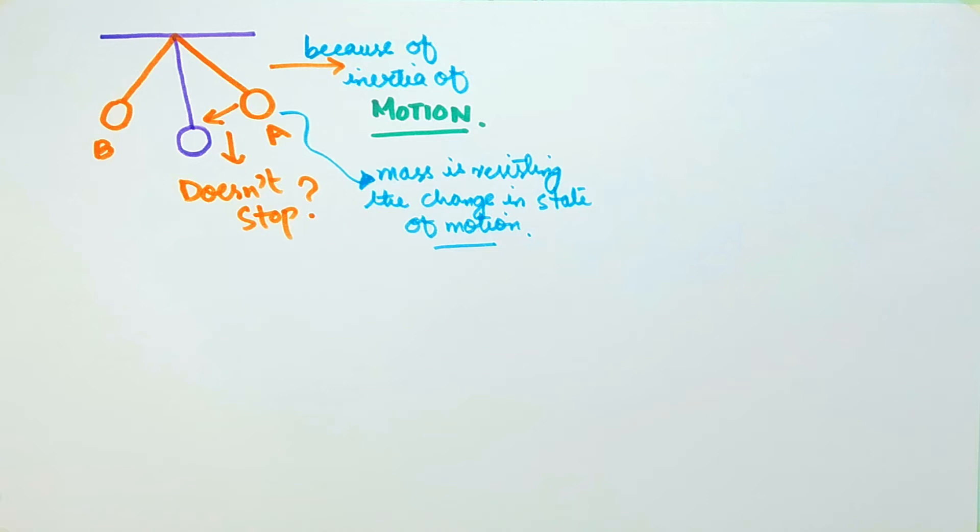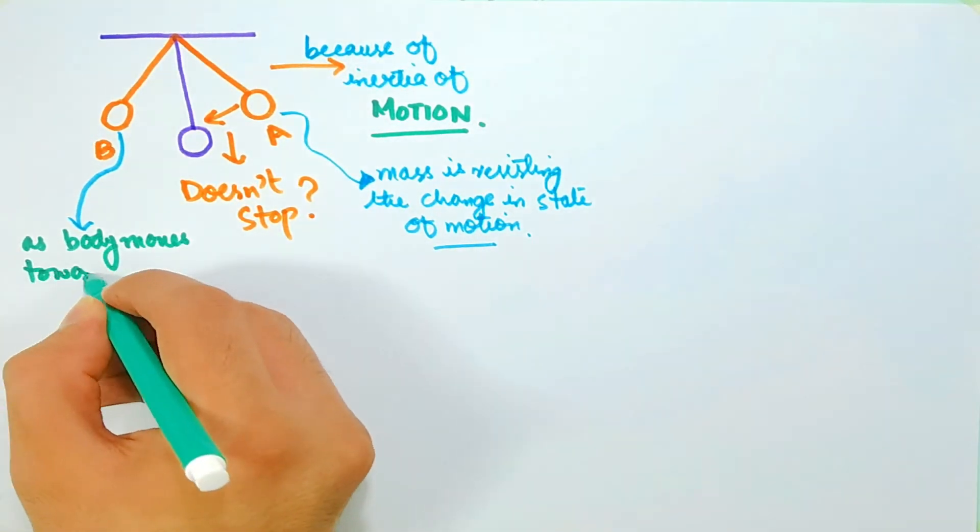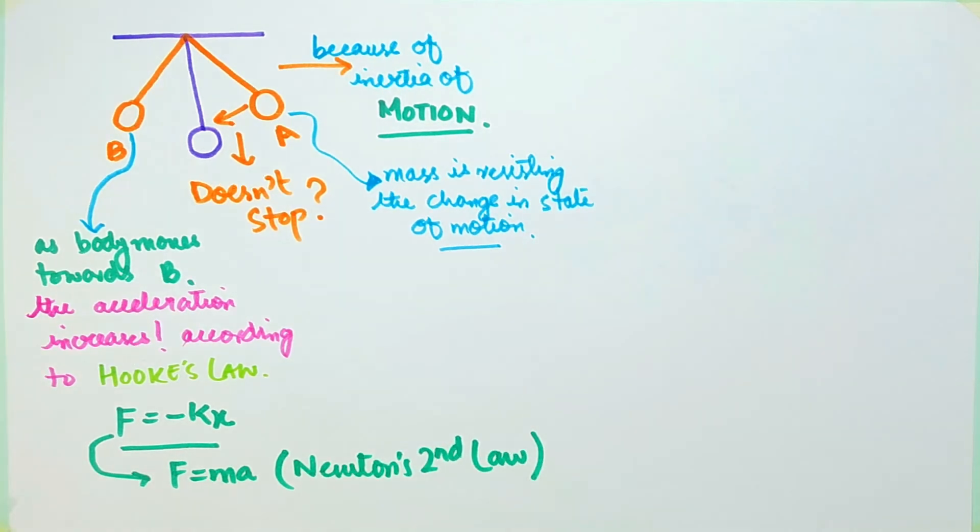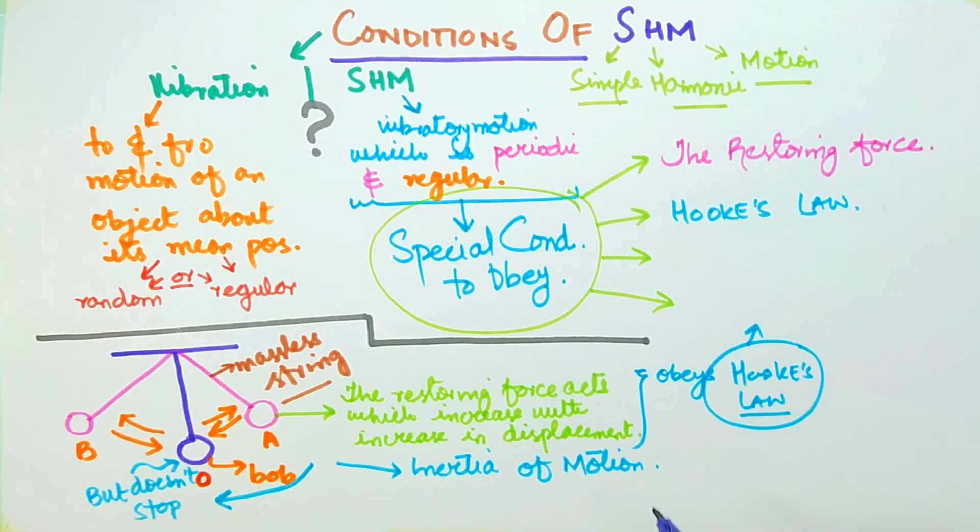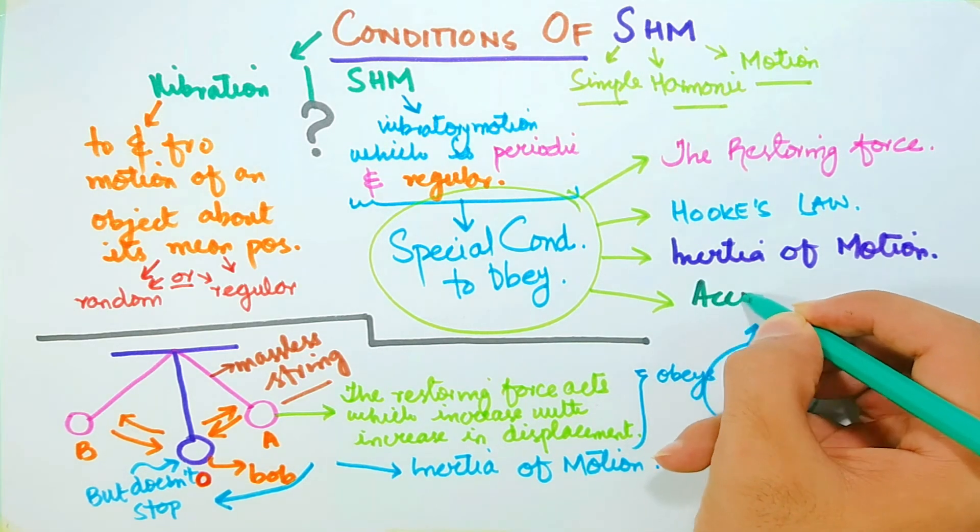Again, the elastic restoring force at B increases, increasing the acceleration, as said by Newton's second law of motion formula, that is, F equals M A, where the acceleration is directly proportional to the force applied. Therefore, when the restoring force increases, the acceleration will automatically increase. Thus, the third and fourth conditions to execute SHM are inertia and acceleration, respectively.